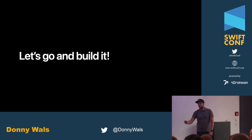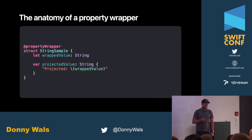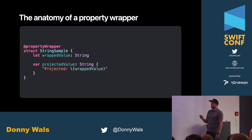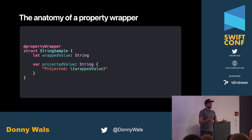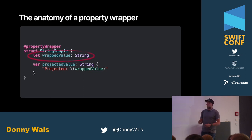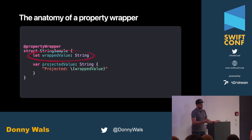Before we can talk about how to do this for SwiftUI, we need to talk about property wrappers in general — the anatomy of a property wrapper. A property wrapper that does a bunch of things doesn't involve a lot of code. The one thing we need is to annotate the struct or class with the @propertyWrapper annotation. Every property wrapper must have a wrappedValue — that's the one requirement. If it doesn't wrap anything, it's not a property wrapper.